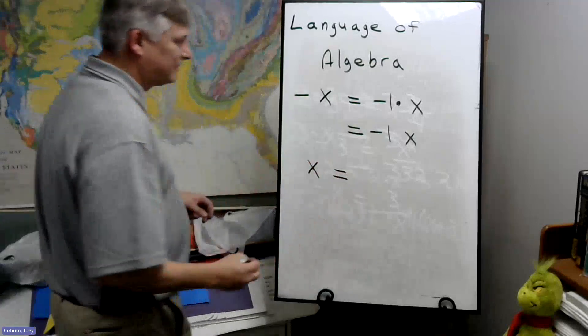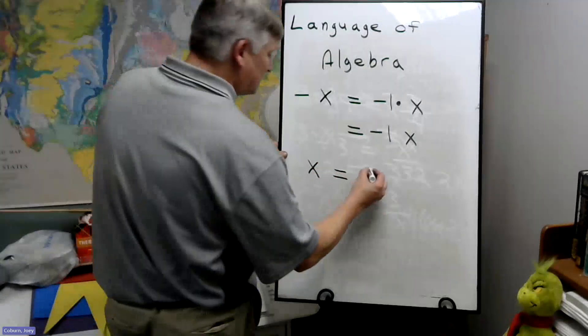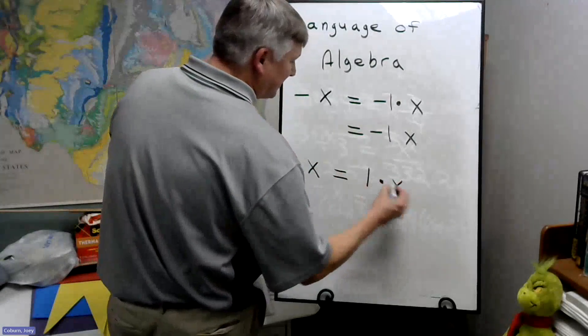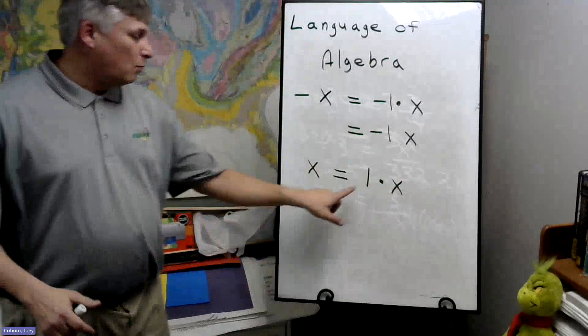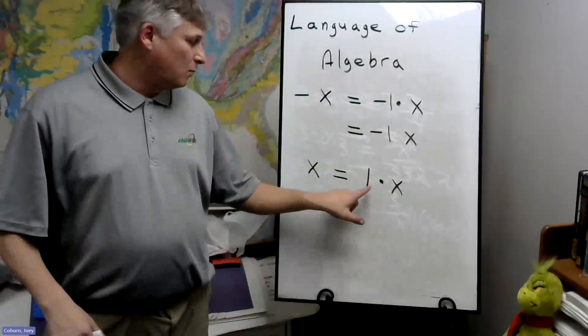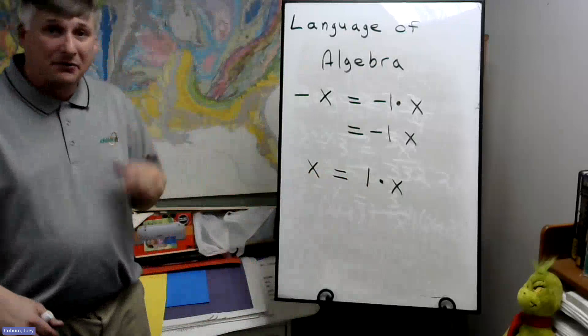Another thing that comes up, and this is kind of strange, X by itself. This technically means one times X. And the reason is, well, one times, say, three is just three, so one times X is just X.